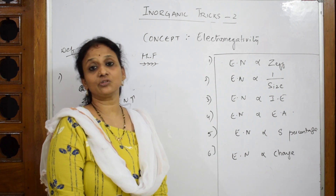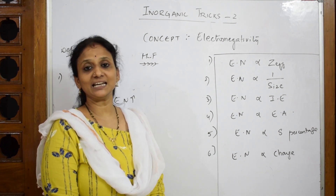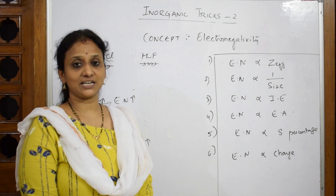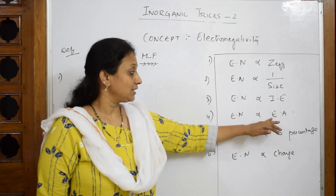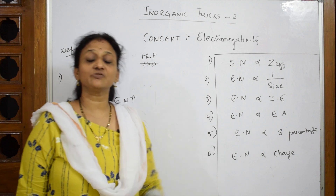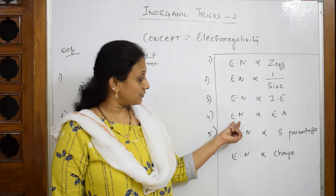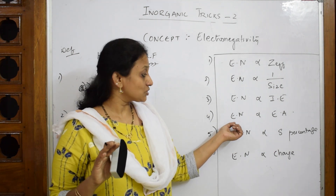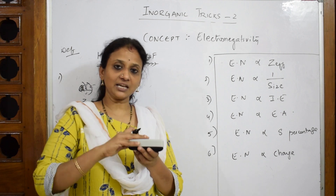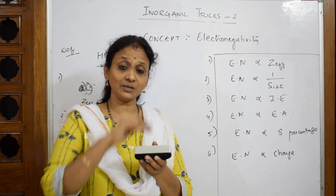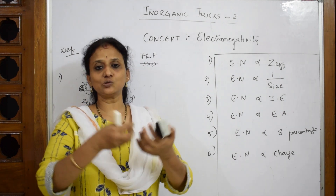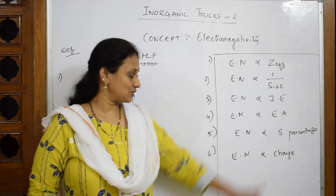Electronegativity and electron affinity — electron affinity, or electron gain enthalpy, is the energy released when you are adding a particular electron to a neutral gaseous atom. Both are directly related. When the electronegativity, or the dragging capacity between them, is very strong — as in HF — if the dragging capacity is more, the energy released also will be more, because it is trying to hold the electron. If the dragging capacity is less, the energy released also will be less. That is why they are directly related.